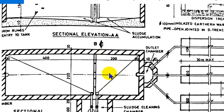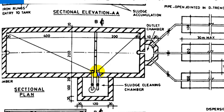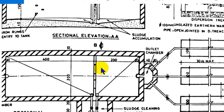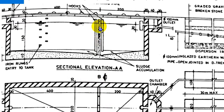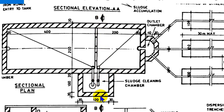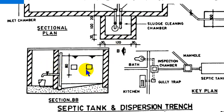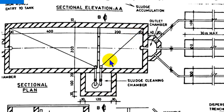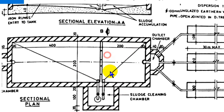This pipe is used in the sludge cleaning chamber. The wall is a concrete wall. This wall has two openings in section B. There are two holes and they will be passed through.